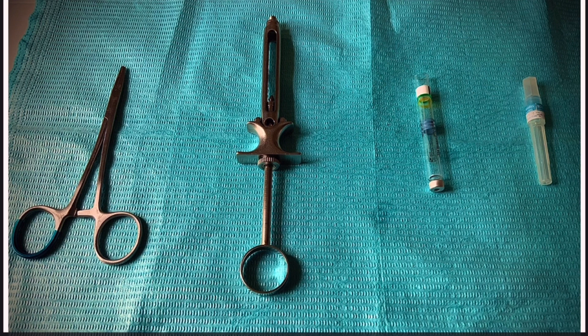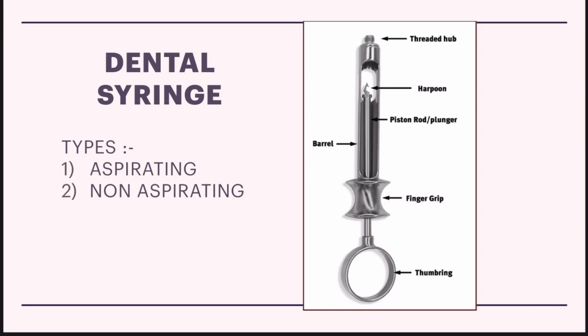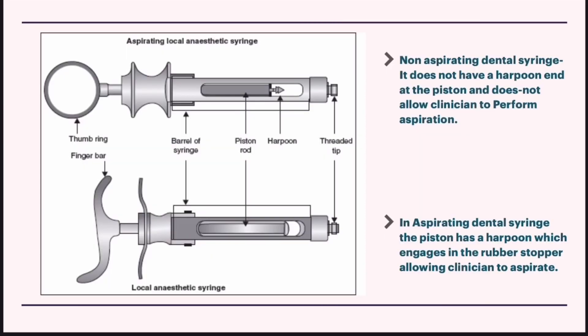Today's video is on the armamentarium of local anesthesia in dentistry. First is the dental syringe — it can be aspirating or non-aspirating types. There are various components of the dental syringe, which are: thumb ring, finger grip, barrel, piston rod, harpoon, and threaded hub.